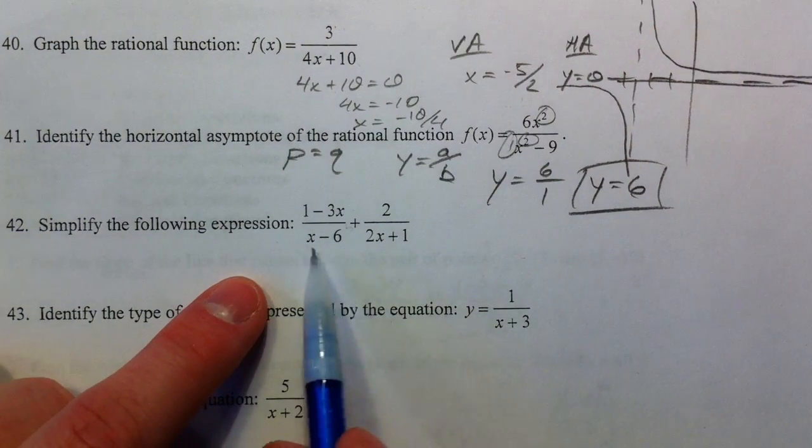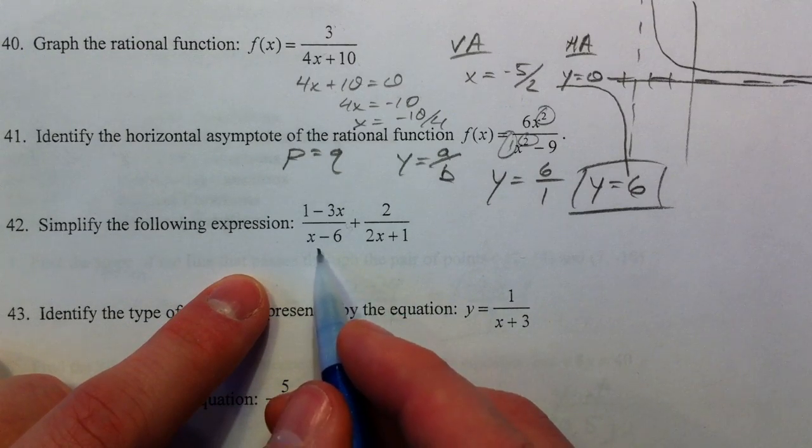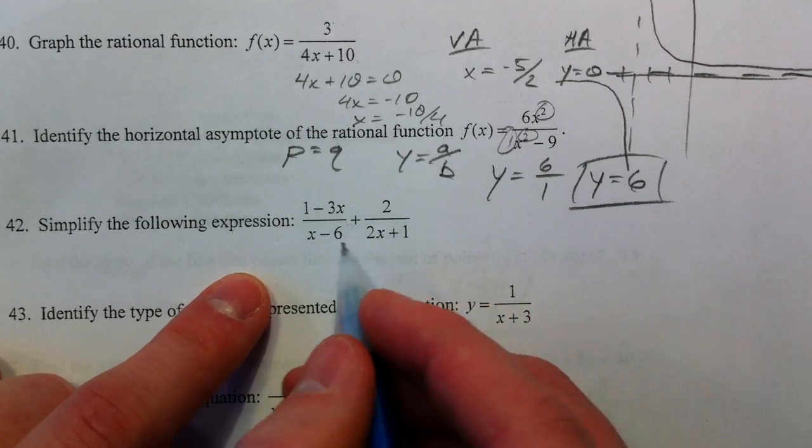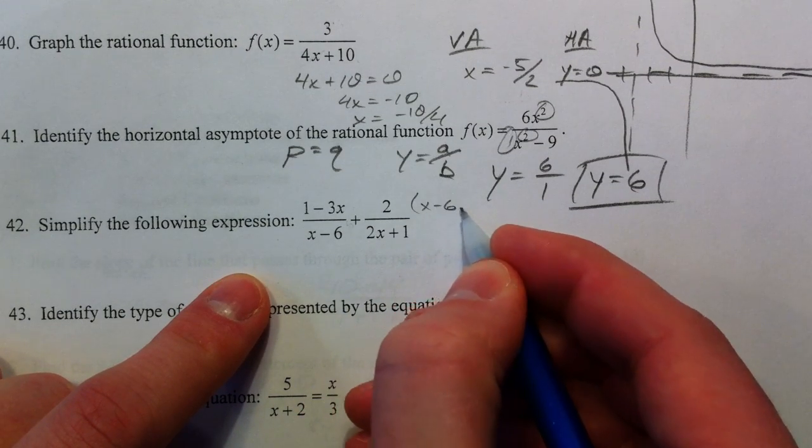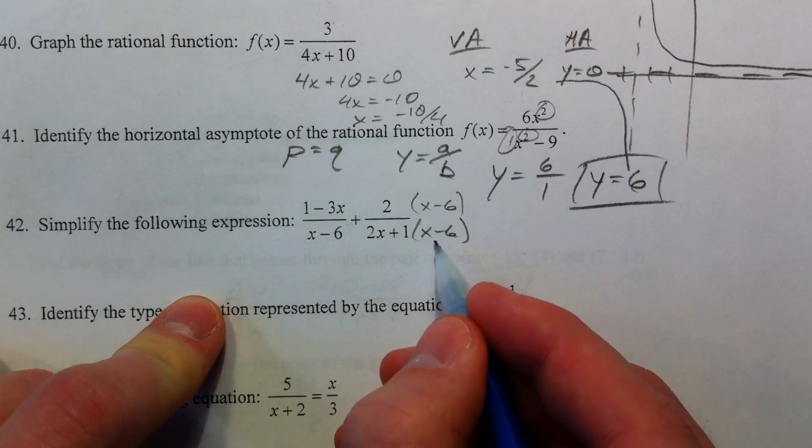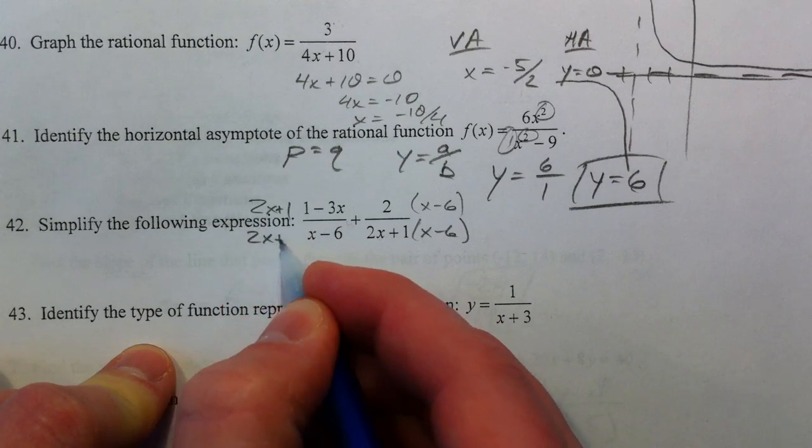Next one. Trying to simplify this expression. We need common denominators to add things together. And so, unfortunately, they don't have anything in common. And so we're going to multiply them by each other. We're going to multiply by X minus 6 over X minus 6, 2X plus 1 over 2X plus 1.